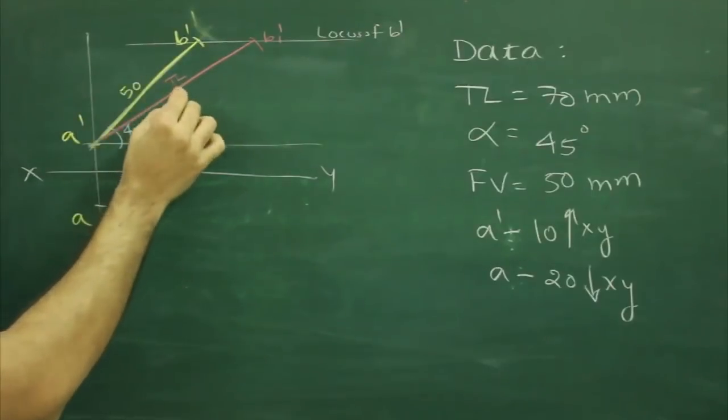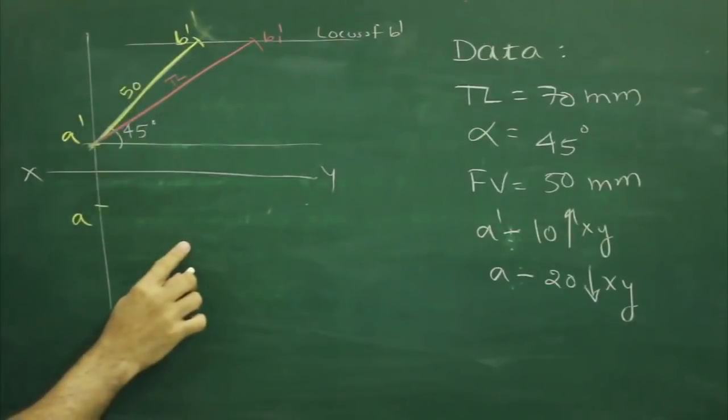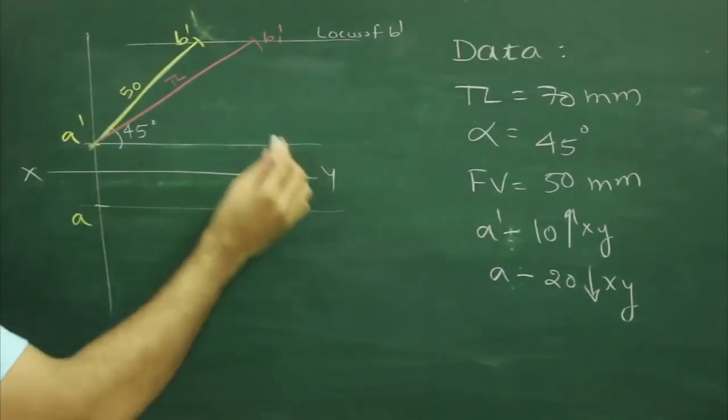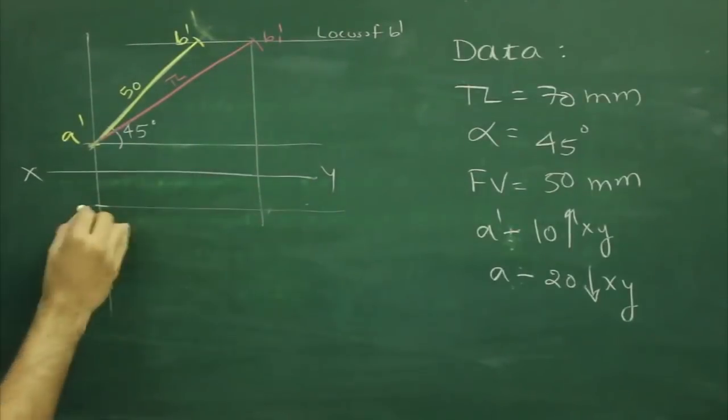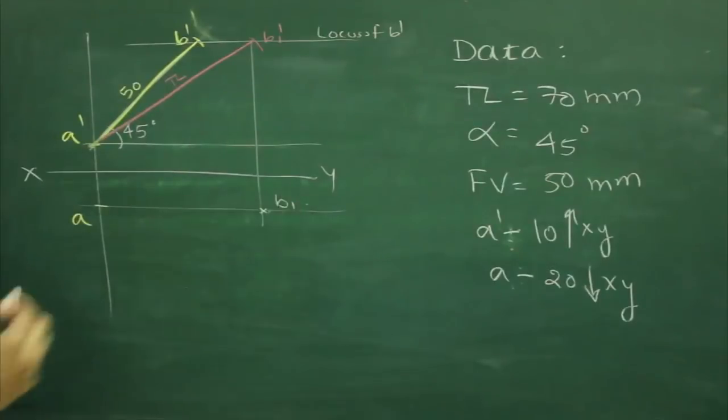Now after drawing front view and true length, now we need to draw top view. So what we will do, we will project B1 dash till A. Wherever it will cut, that will be B1.